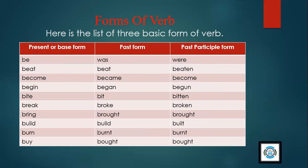Present or base form, past form, and past participle form. Like first form your present form is 'be', past is 'was', and past participle is 'were'. Then comes 'beat', 'beat', 'beaten'. 'Become', 'became', 'become'. 'Begin', 'began', 'begun'. 'Bite', 'bit', 'bitten'. 'Break', 'broke', 'broken'. 'Bring', 'brought', 'brought'.